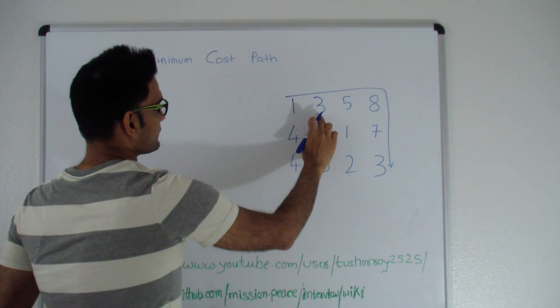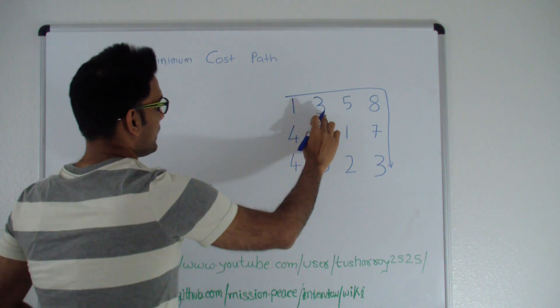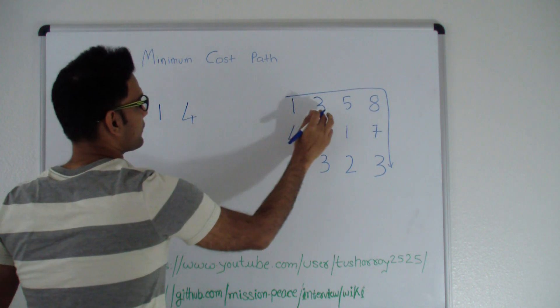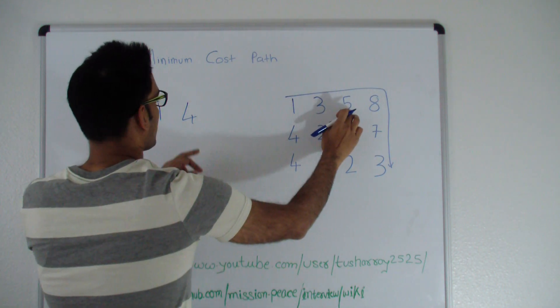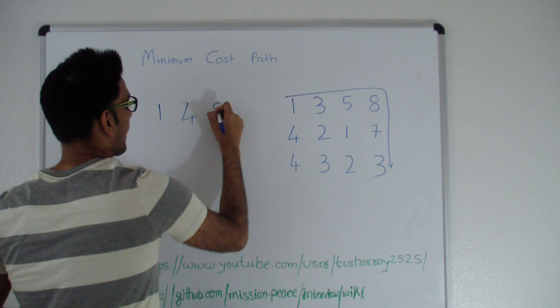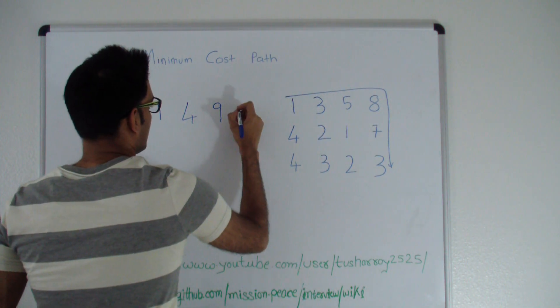To reach this point there's only one path you can take from 1, which is to go right, and the cost to reach that will be 4, which is 3 plus 1. To reach this point the cost will be 5 plus 4, which is 9. To reach this point it will be 9 plus 8, which is 17.